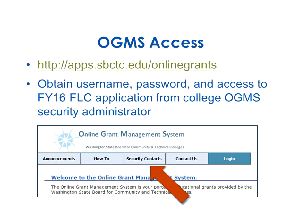It's entirely possible that your college has a process where only certain staff — typically grants office or business office staff — have access to OGMS by design. If that's the case, those staff will work with you to write and submit the application. Regardless of the process, it is extremely important to work closely with your grant staff throughout this whole process.